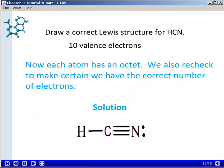And at that point, we can see that each of the atoms now has an octet, except hydrogen, which is happy with 2 electrons. We also recheck to make sure that we have the correct number of electrons shown.